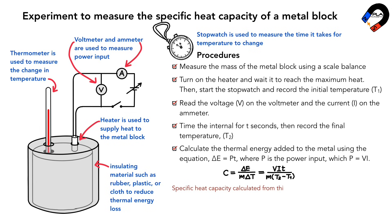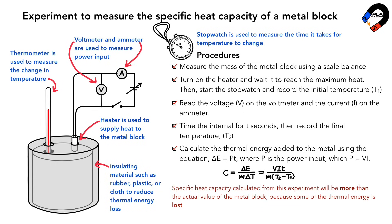The specific heat capacity c calculated from this experiment will be more than the actual value of the metal block, because some of the thermal energy is lost to the surroundings, causing a smaller change in temperature.